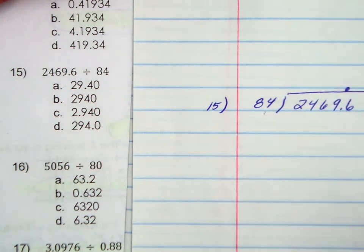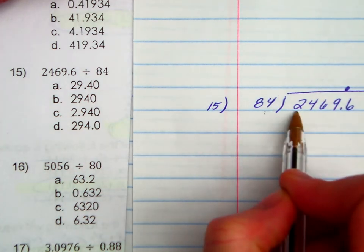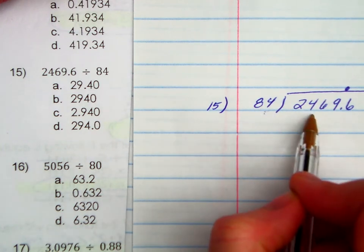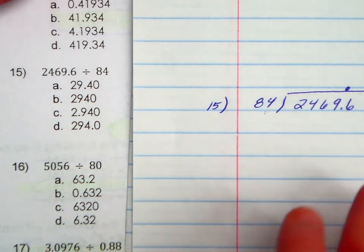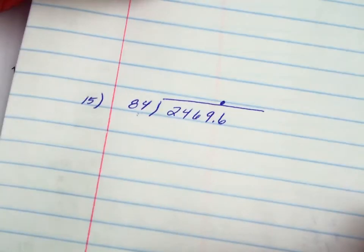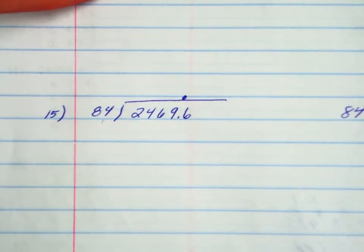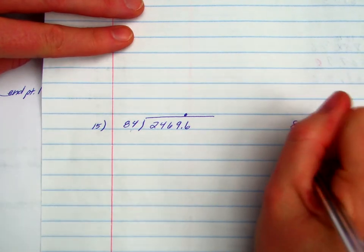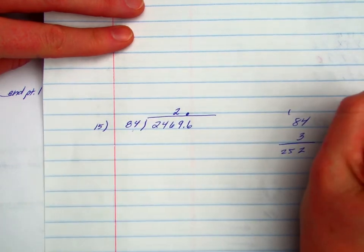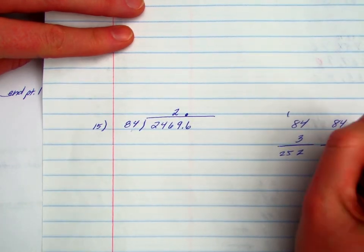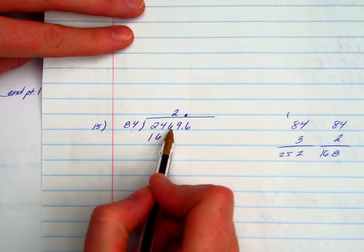I'm going to take this decimal, rise it up here. The first question you ask yourself is, how many times is 84 going to 2? It can't. How many times is 84 going to 24? It can't. How many times can 84 going to 246? Not sure. I'm guessing either 2 or 3 times. I have to test it out. I don't have this memorized. I do believe 3 is going to be too big. So that's not going to work. I'm going to go with 2.